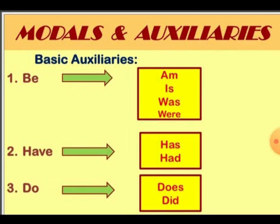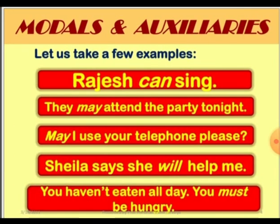Basic auxiliaries: be, am, is, was, were, have, has, had, do, does, did. Let us take a few examples: Rajesh can sing. They may attend the party tonight. May I use your telephone, please? Sheila says she will help me.